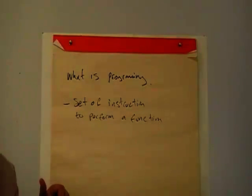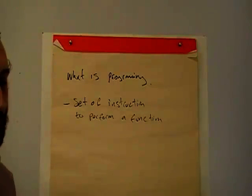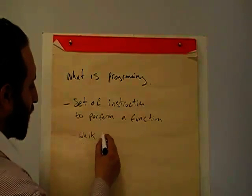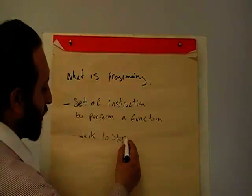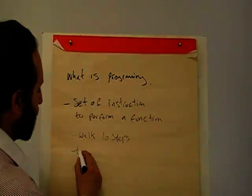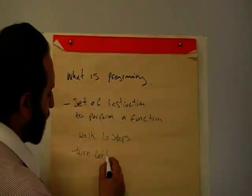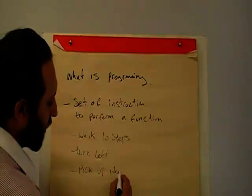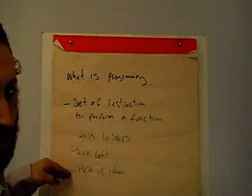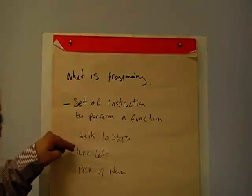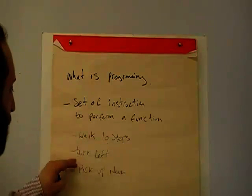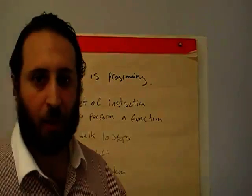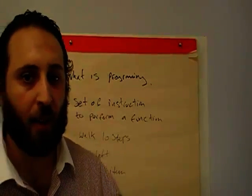For example, if we had a robot and we said to the robot: walk 10 steps and then turn left, pick up item — that would be a program that would execute in sequence: walk 10 steps, turn left, pick up item. So that's the basic introduction of what programming is.